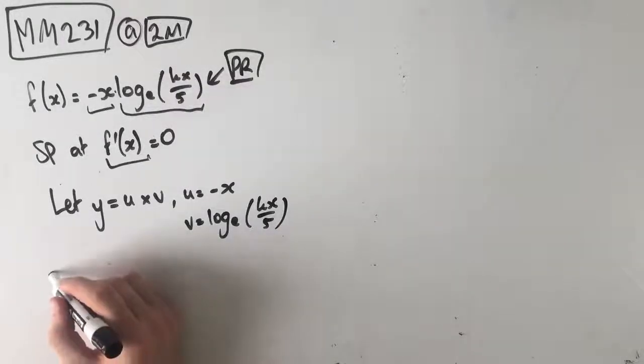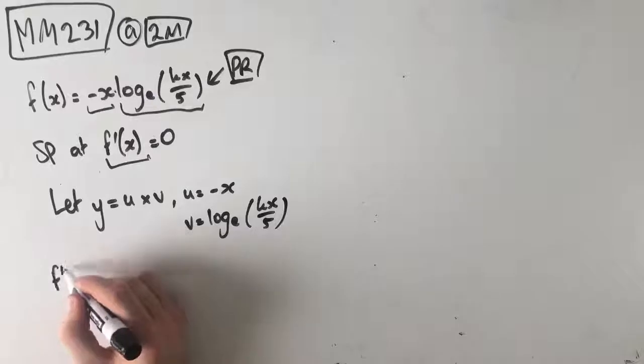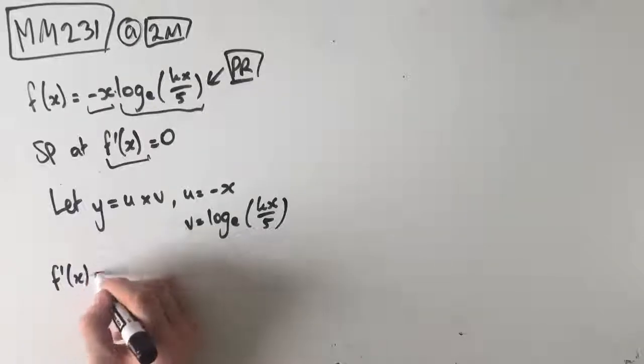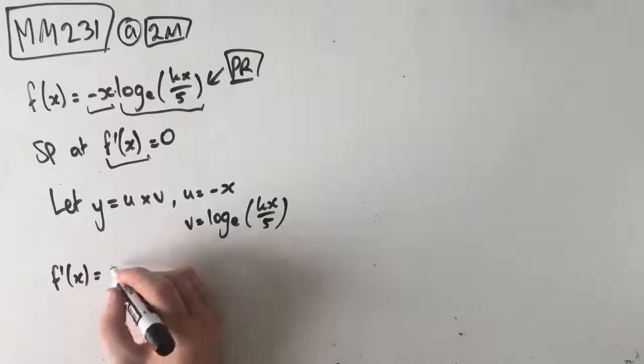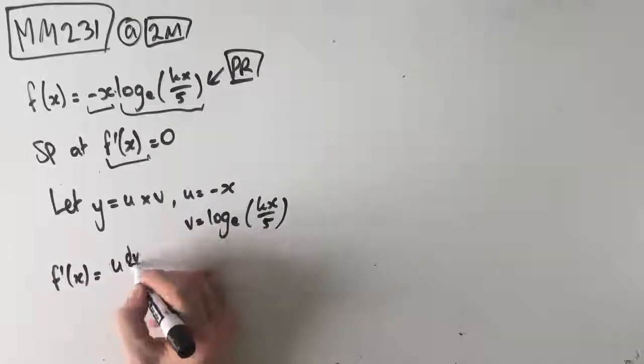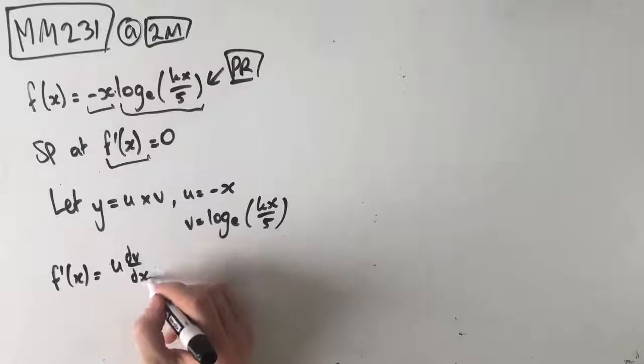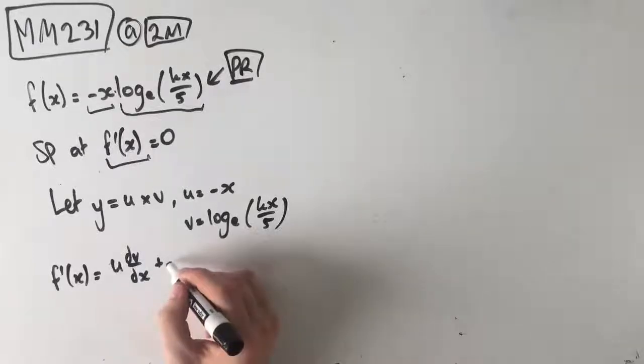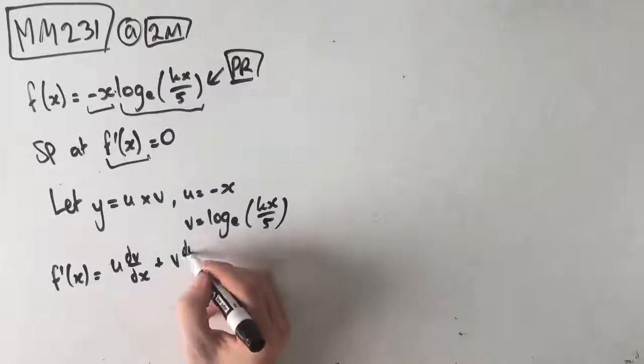dy/dx, or f'(x), is equal to u times dv/dx plus v times du/dx.